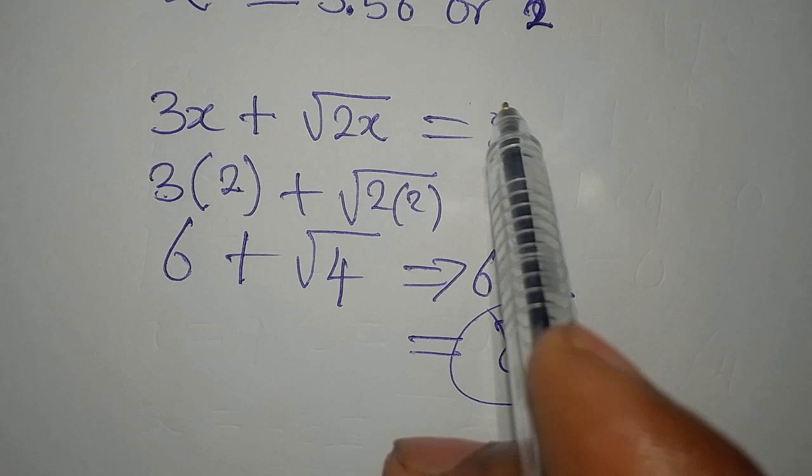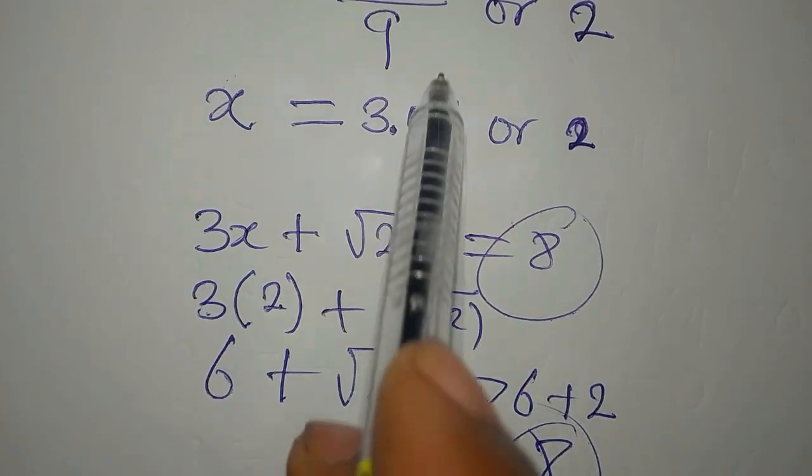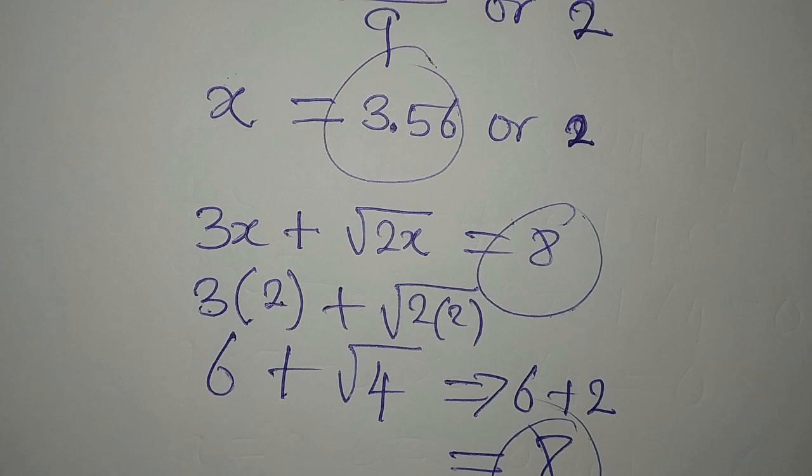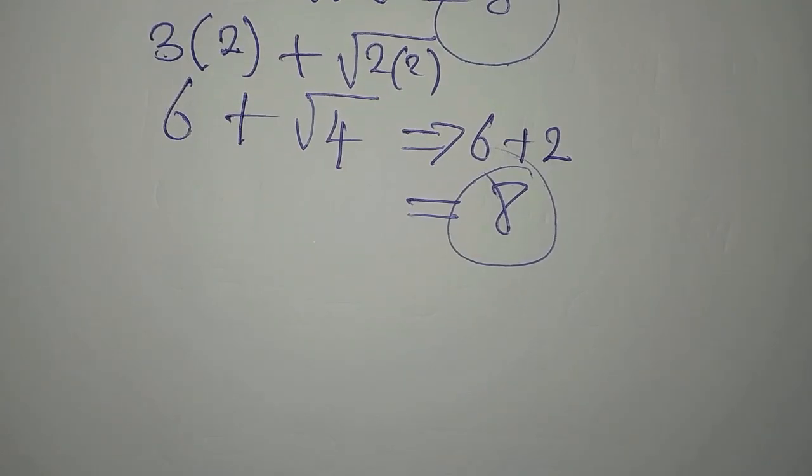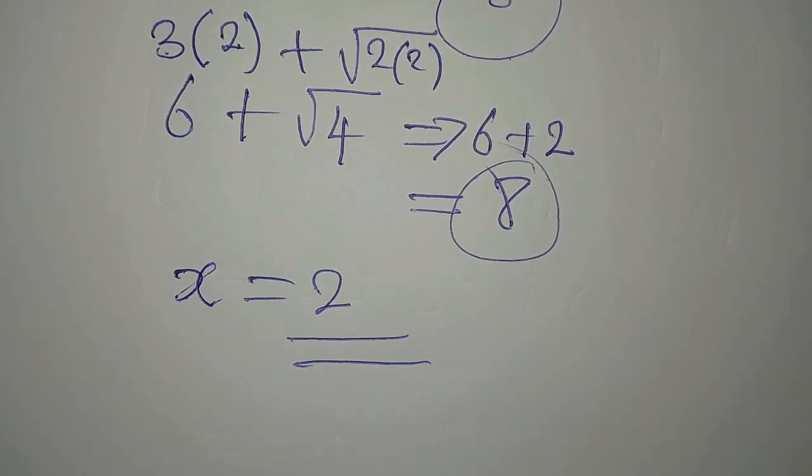That is what we had on the right-hand side. So this means that the first solution has to be rejected because it does not satisfy. Our x is 2. Thank you for watching.